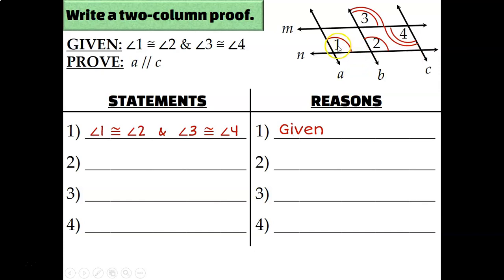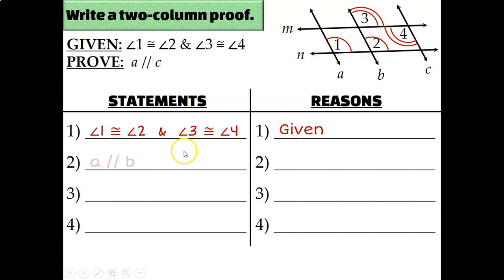Notice that angle one and angle two are corresponding angles — they're both in the top right-hand corner out of the four angles created by the intersection of line N with lines A and B. So since I have corresponding angles that are congruent, I can conclude that line A is parallel to line B because of the corresponding angles converse.